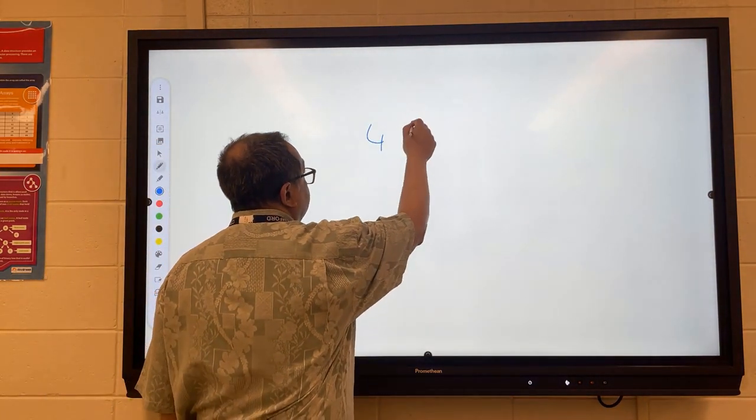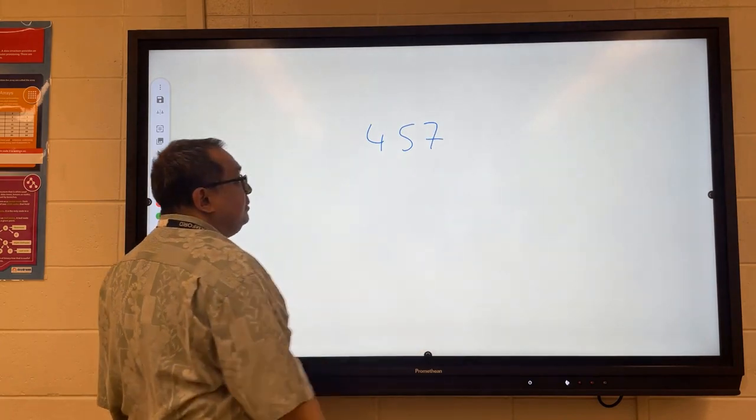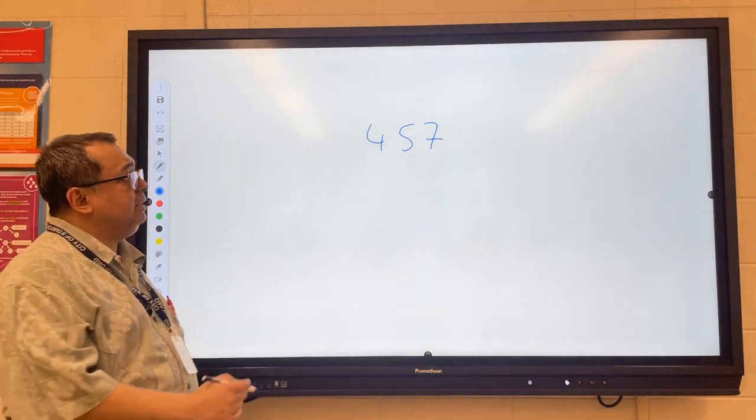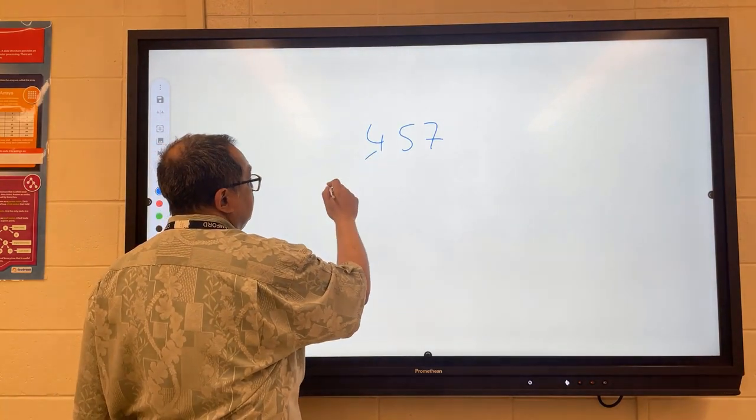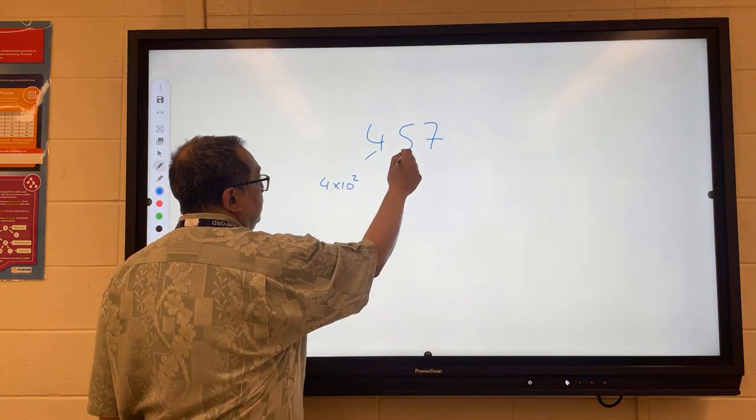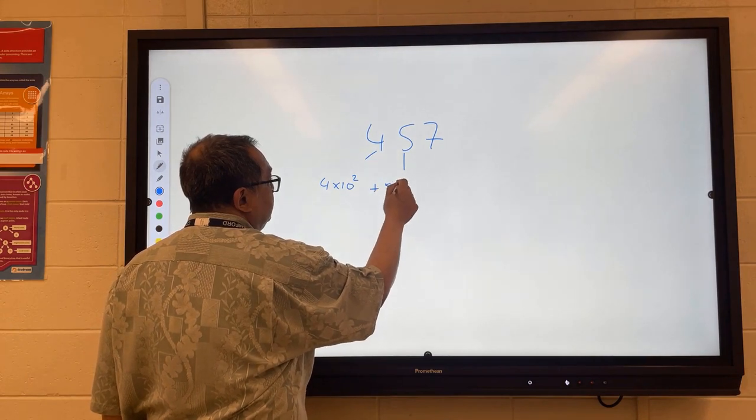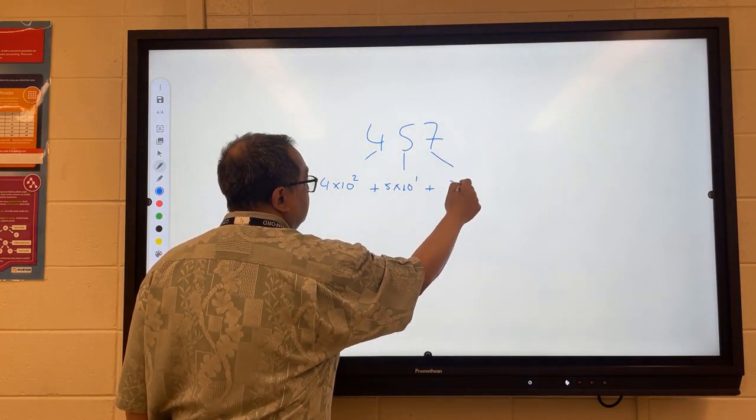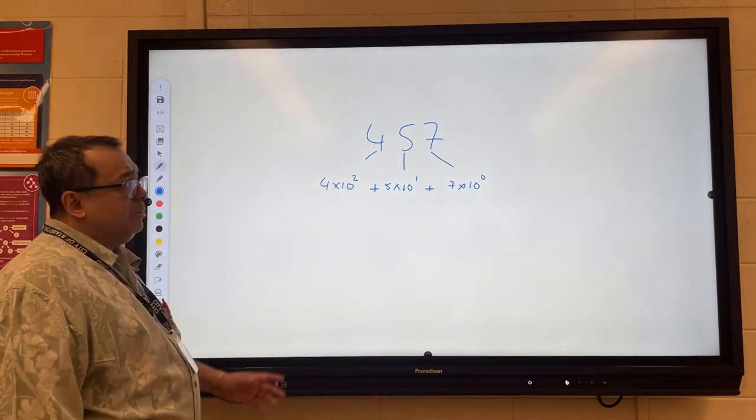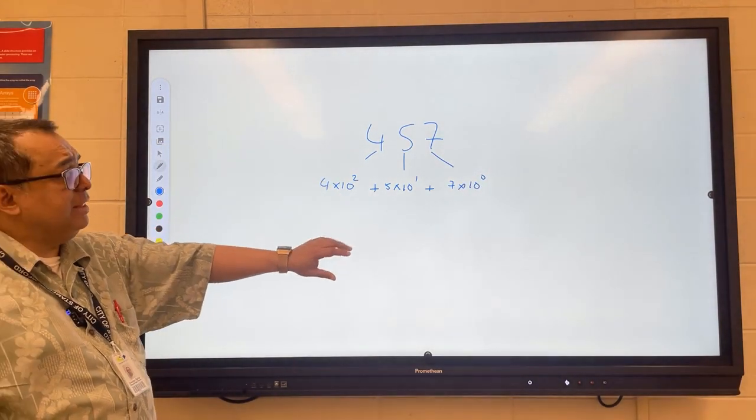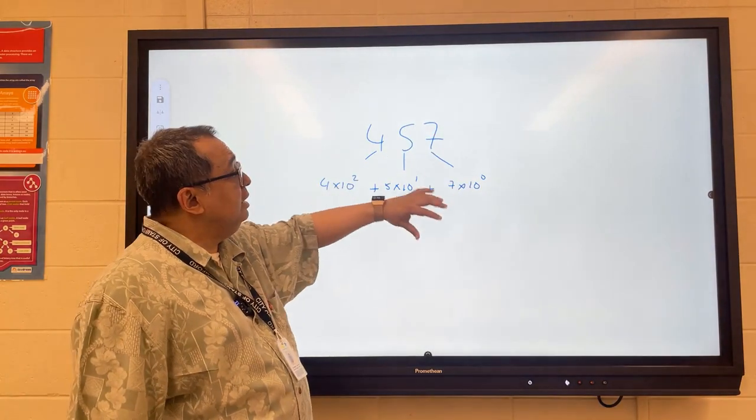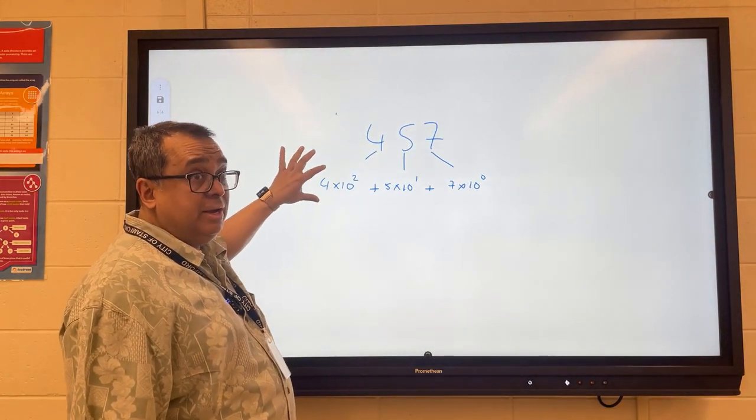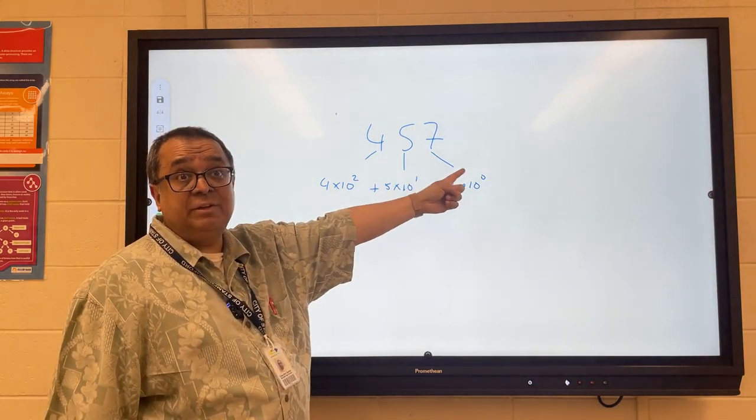Let me rewrite it. Some extra numbers kind of showed up there for a second. So if I was going to expand this, I could expand it like this. I could say this is 4 times 10 squared plus 5 times 10 to the first plus 7 times 10 to the zero. So that would be one way I could expand the number. Then this basically is the number 7. That's the number 50. That's the number 400. And then if I add them together, I get 457.